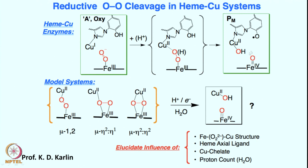Upon oxygen-oxygen cleavage in this peroxo species, we would get the copper 2 hydroxo species. In the presence of phenoxy radical formation via hydrogen atom abstraction, we would also get high-valent iron oxo intermediate formation. The nature of this iron-copper species could be end-on bound geometry, side-on end-on bound geometry, or side-on and side-on bound geometry. Most likely, if it is a tetradentate ligand this one species forms; if it is a tridentate ligand, that species forms. Since the enzyme has a tridentate ligand, that species is likely forming in the enzyme.